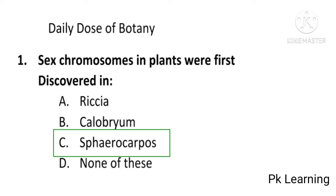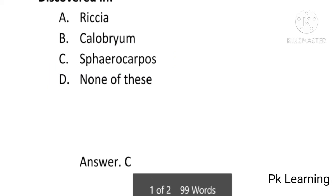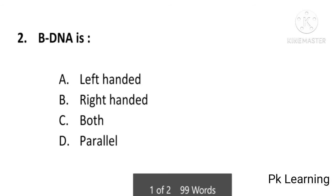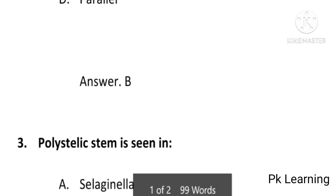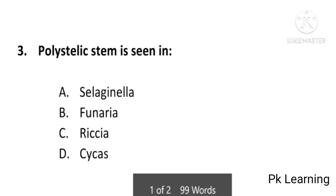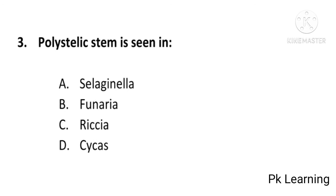C is the correct option. Next question: B-DNA is left-handed, right-handed, both, or parallel? The answer is B — right-handed. B-DNA is right-handed; B is the correct option. Next question: polystoelic stem is seen in Selaginella, Funaria, Risia, or Cycas?